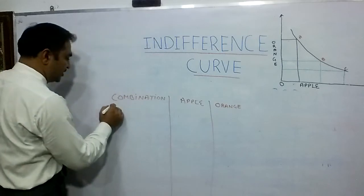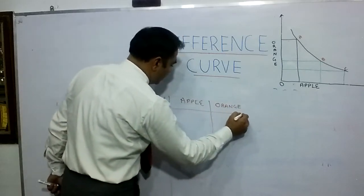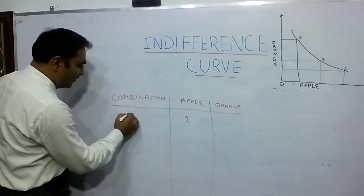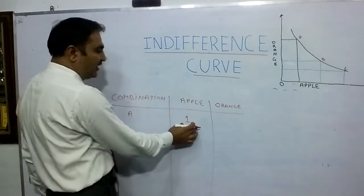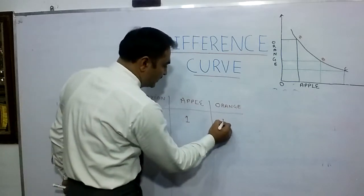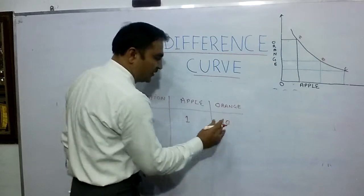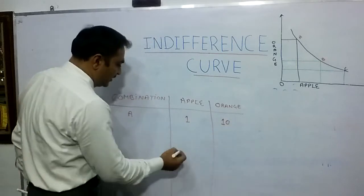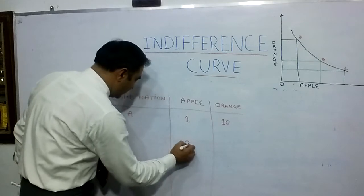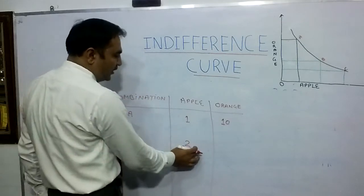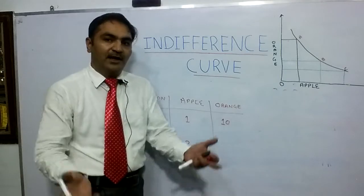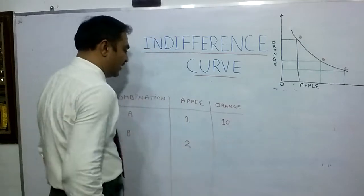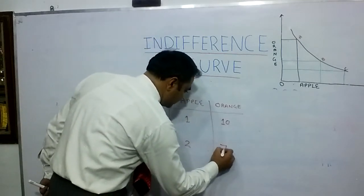Try to understand this concept. Suppose I have one apple — this is combination A. In combination A, I have one apple and 10 oranges. Now I want to gain one more apple. In combination B, I want to gain one more apple, so naturally I will have to sacrifice something — I will have to sacrifice some oranges. So I come down from 10 to 7 oranges.